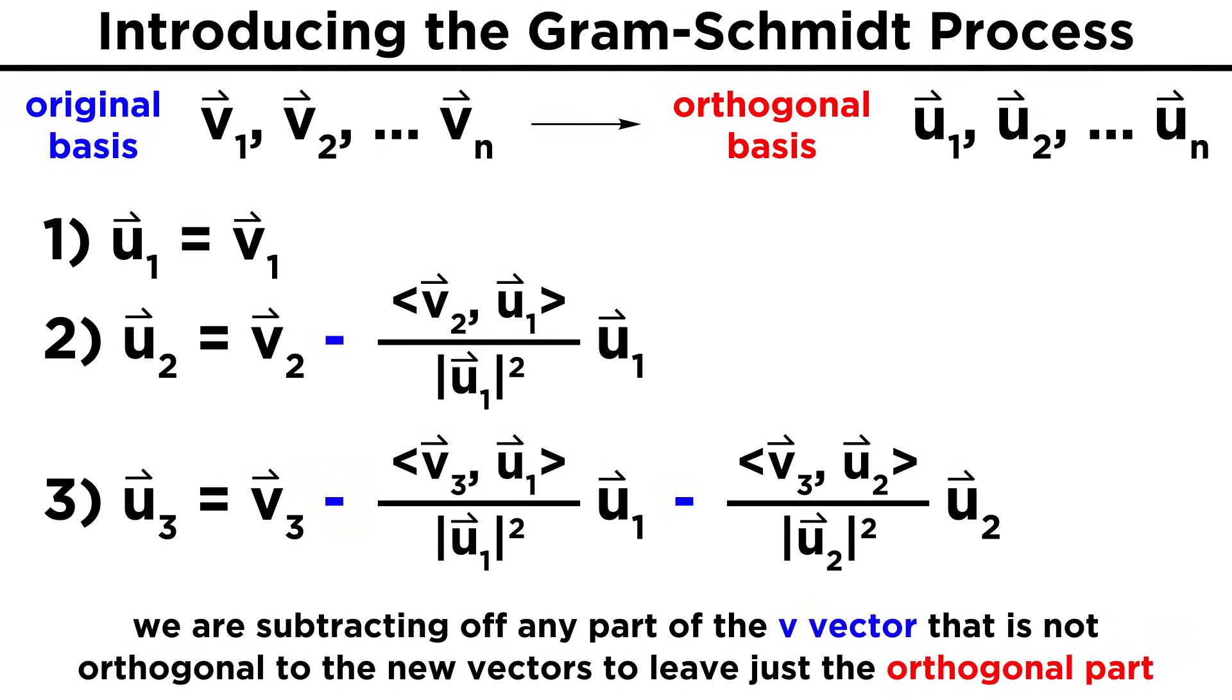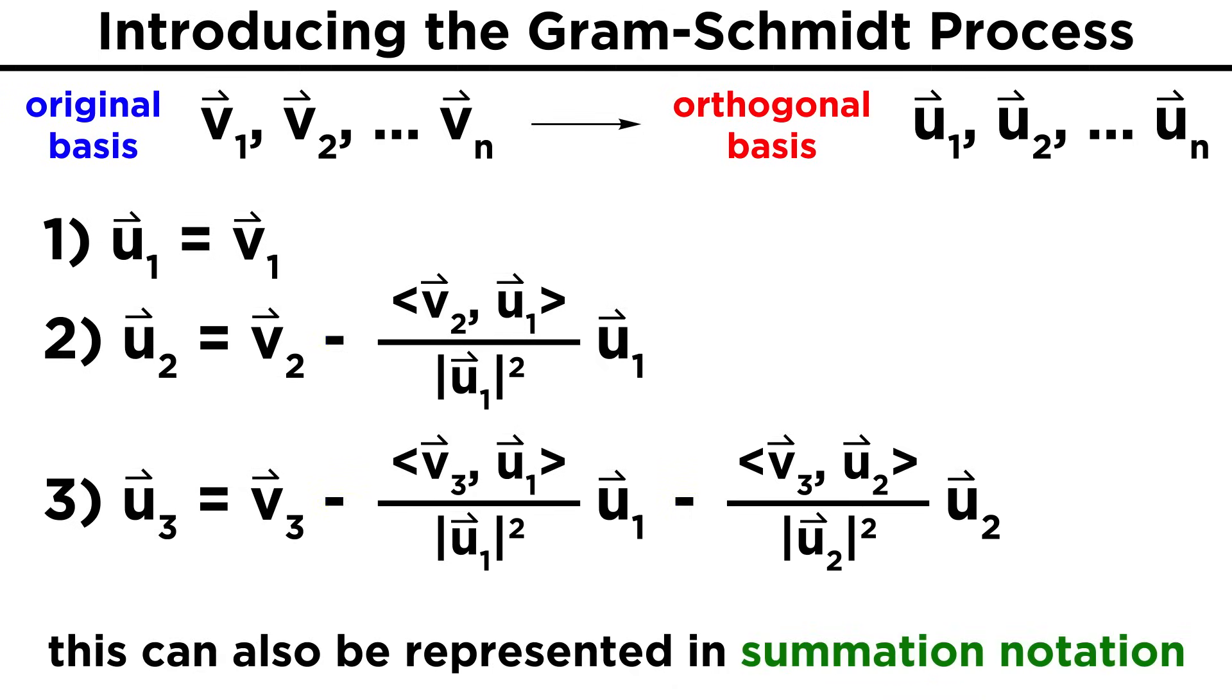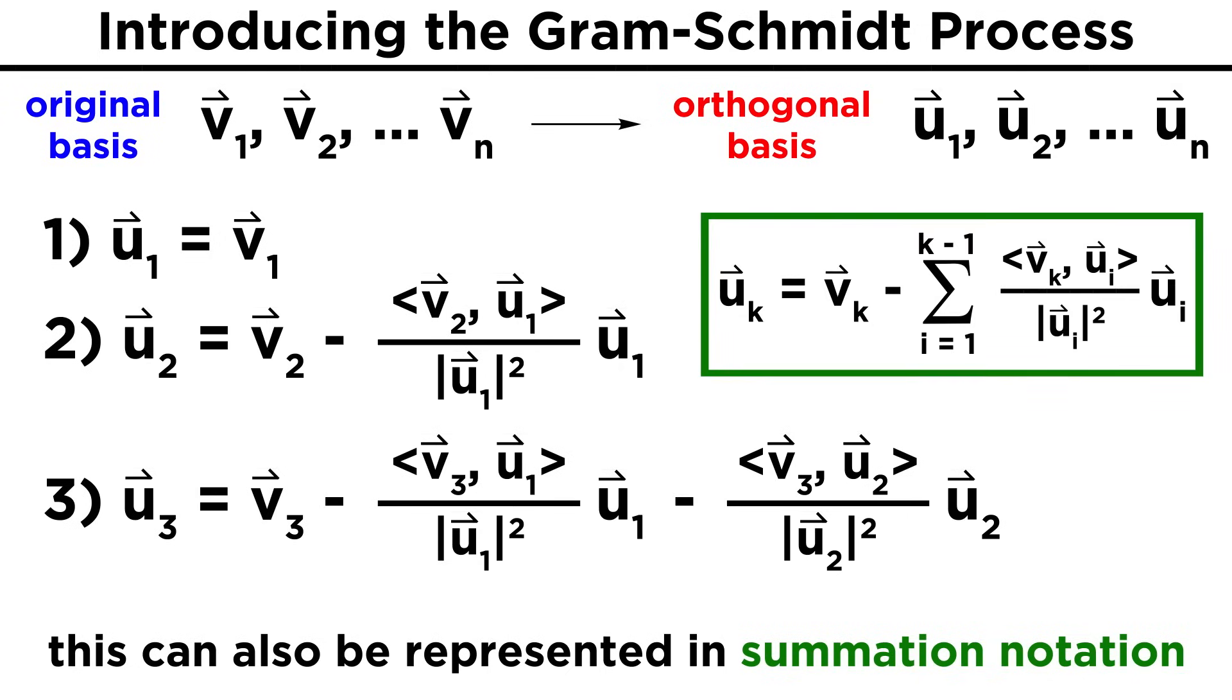The reason we need to do this is that we are subtracting off any part of the v vector that is not orthogonal to the new vectors we have found, leaving only the orthogonal part. To make things a little more succinct, each of these new vectors after the first one can be put into summation notation as follows: uk equals vk minus the sum over i from one to k minus one of the inner product between vk and ui divided by the length of ui squared times ui.